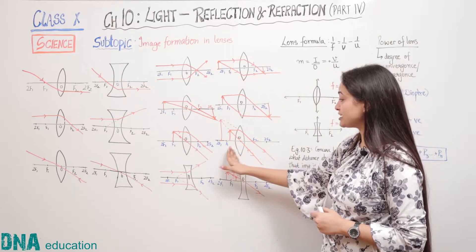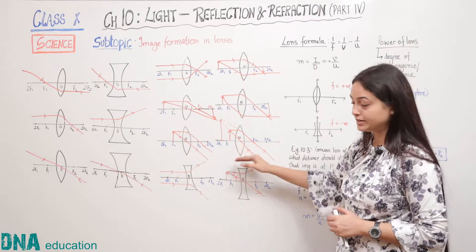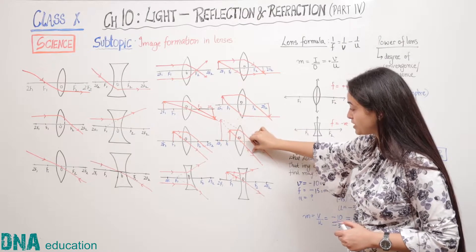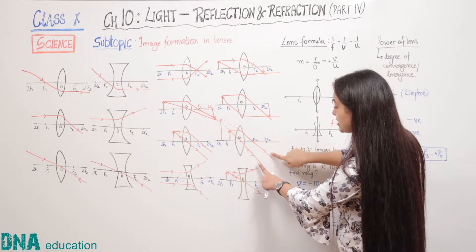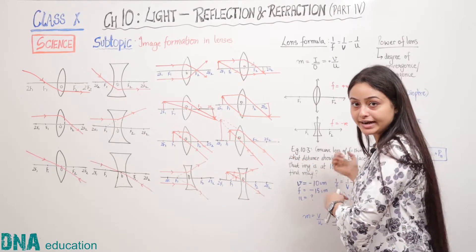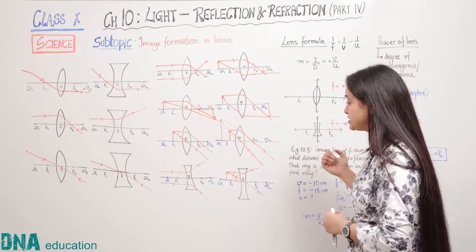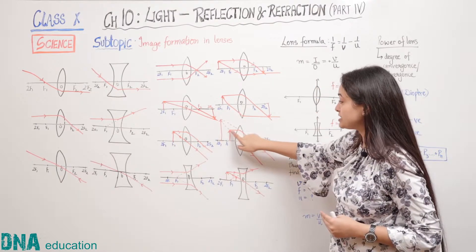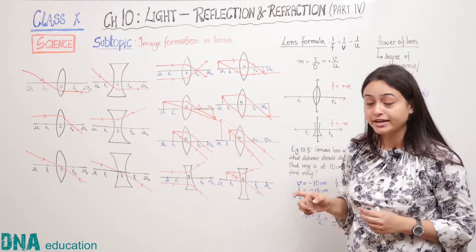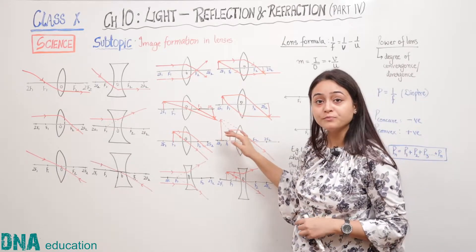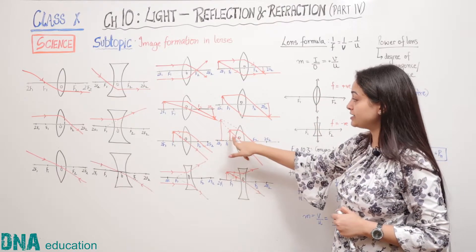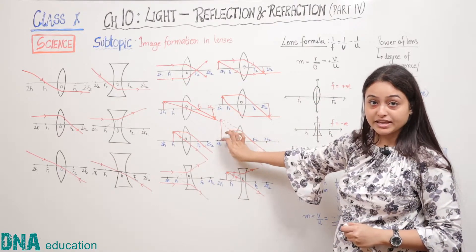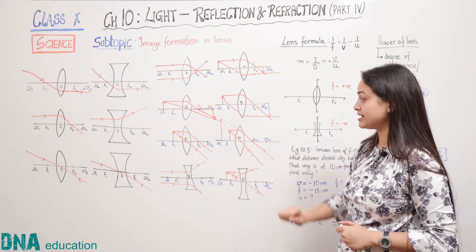The next case is when the object is placed between F1 and the optical center. The parallel light ray refracts from focus and the ray through the optical center goes undeviated. These two emergent light rays are diverging, so they will never meet. If we produce the light rays back on the other side of the lens, we can see they appear to meet, forming a virtual image. The image formed is virtual, erect and enlarged — larger in size than the object.